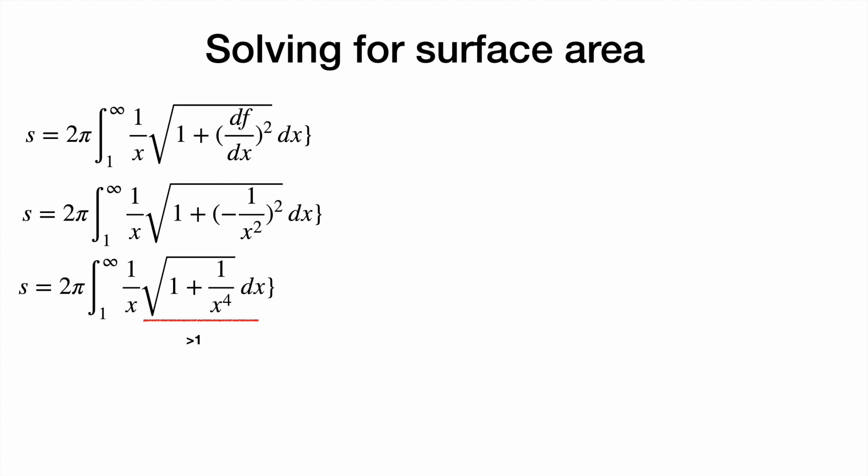So this improper integral is greater than the improper integral of 2 pi 1 over x. Instead of having infinity as a bound of integration, we're going to replace it with t and put a limit as t goes to infinity.